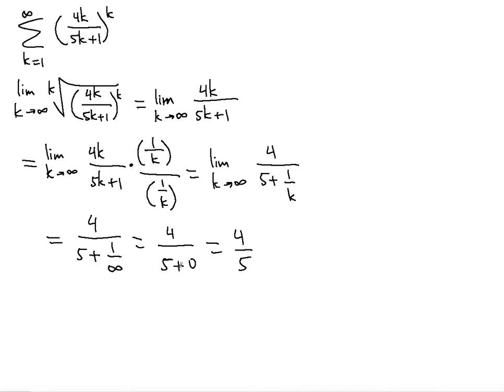The root test is beautiful in the sense that you will find the limit value, and you're going to see what the limit value represents. If it's less than 1, it's going to be absolute convergence. If it's greater than 1, it's going to be divergence. If it's equal to 1, then there's no conclusion. In this case, 4 fifths is less than 1, so we have an absolutely convergent series.